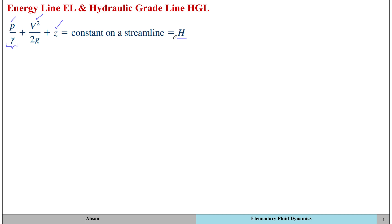Sometimes this information can be difficult to interpret, so we use the graphical form of this equation, which represents the energy line and the hydraulic grade line. The energy line represents the total head available to the fluid, whereas the hydraulic grade line represents the combination of pressure head and elevation head.